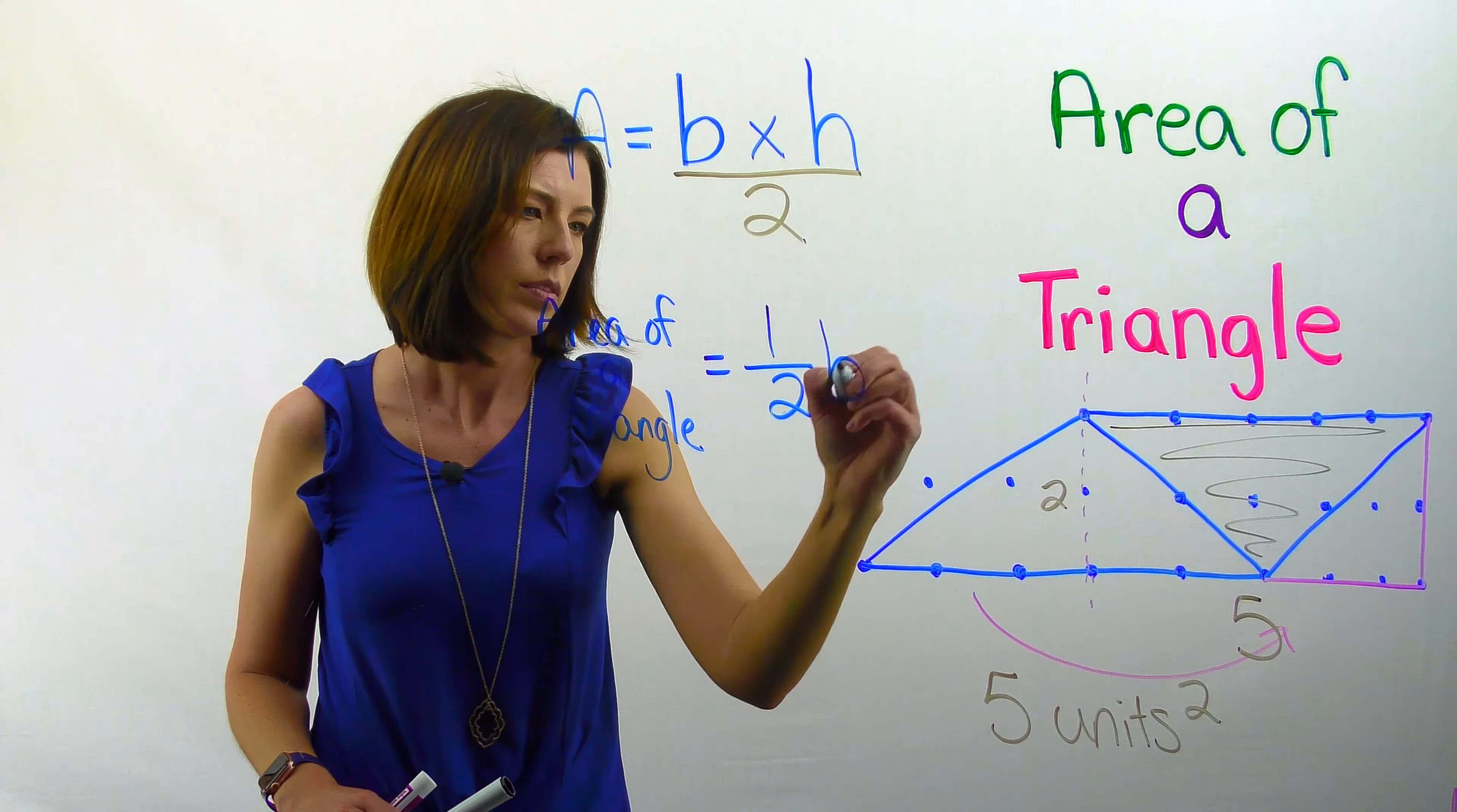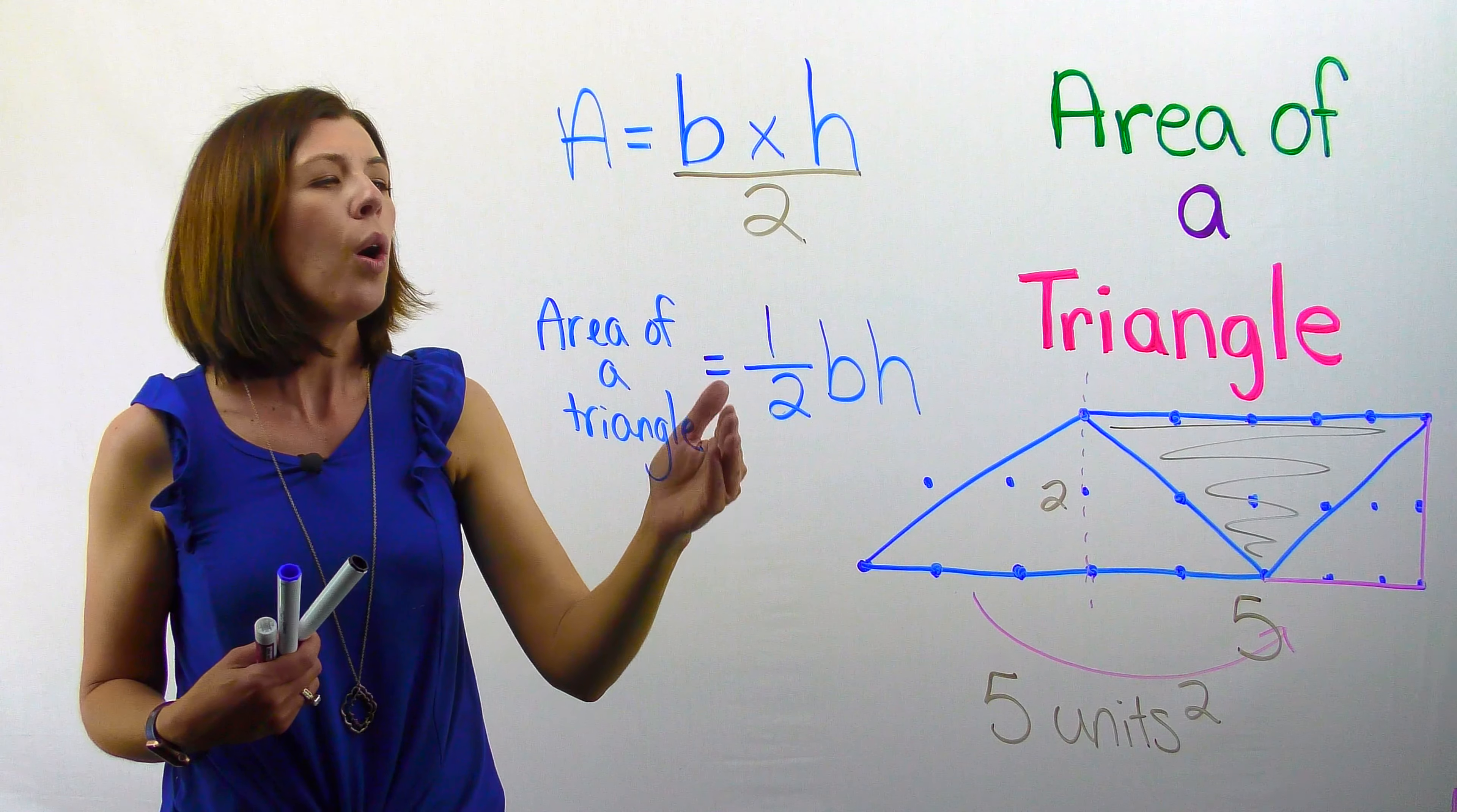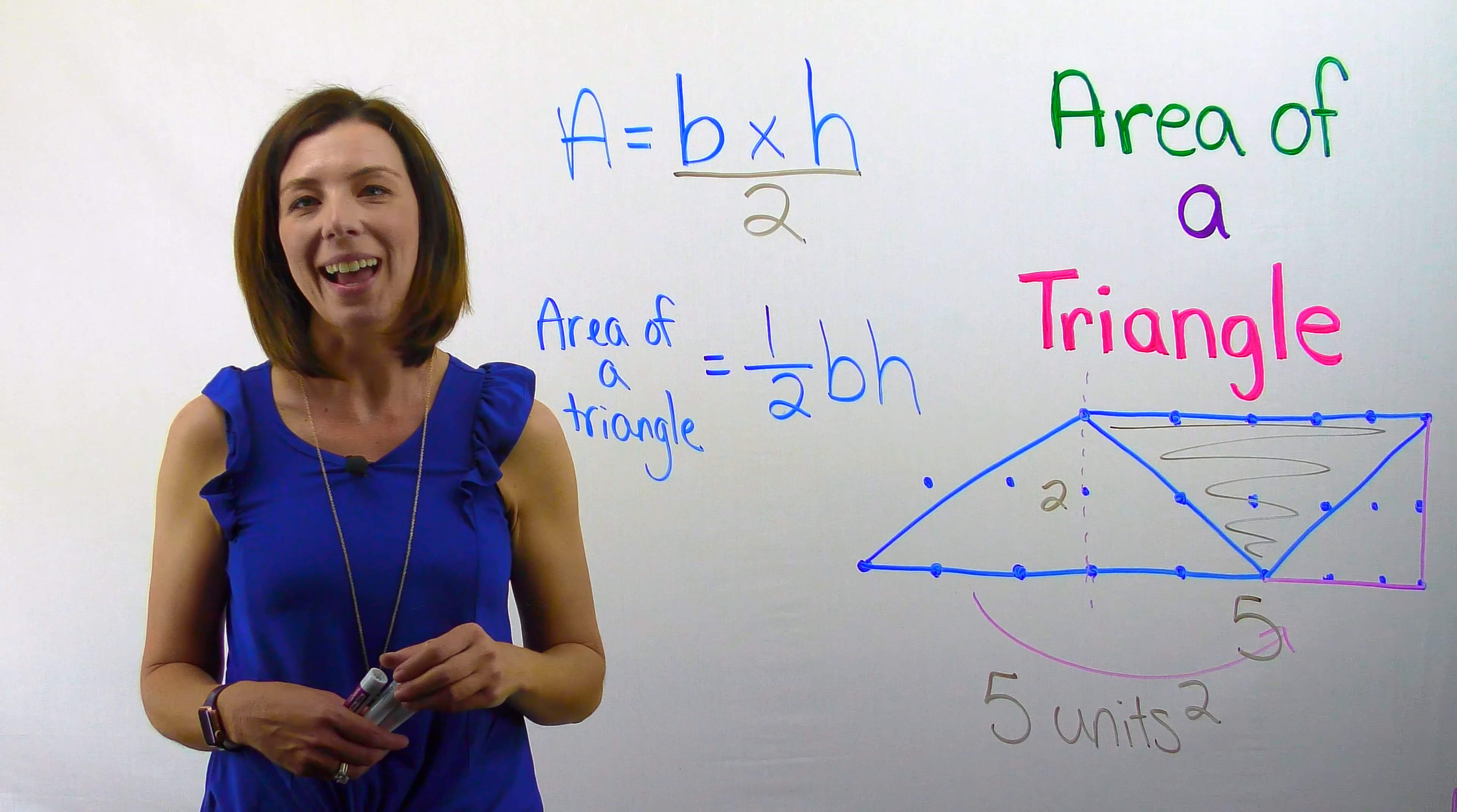Five times two gives me ten. Ten times one half would still give me five. I can write the area of a triangle either way with either of these formulas. So you sometimes will see it base times height divided by two or one half base times height.